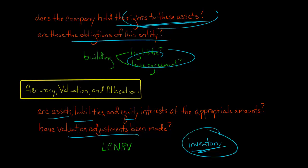So that inventory, if you look at the balance sheet, and it says ending balance, $40 million, there's an assertion being made here that this is valued at lower cost or net realizable value. That's the assertion that management is making.